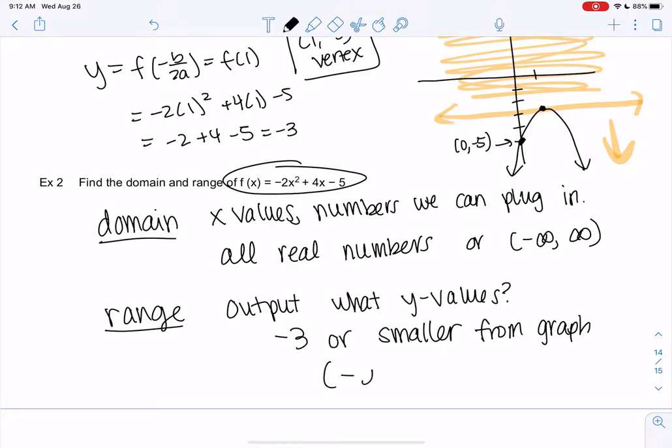So without the graph, I cannot answer this. And so in interval notation, that's negative infinity up to negative 3, and we will include negative 3. So to find range of a quadratic, we need the graph. But domain will always be all real numbers.